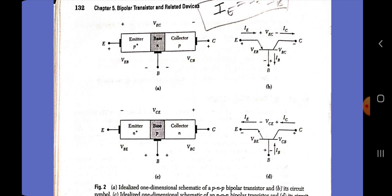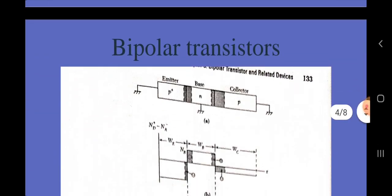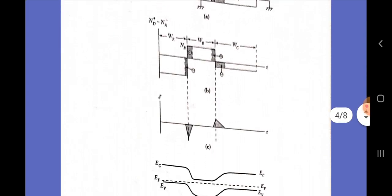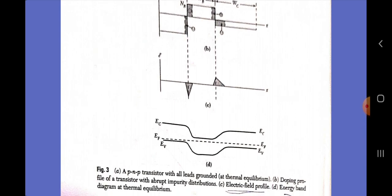Operation in the active mode: this figure shows an idealized PNP transistor in thermal equilibrium — that is, where all three leads are connected together or grounded. The depletion regions near the two junctions are illustrated by the colored regions. The figure below shows the impurity densities in the three doped regions, where the emitter is more heavily doped than the collector. The base doping is less than the emitter doping but greater than the collector doping. The corresponding electric field profiles of the two depletion regions are shown. The energy band diagram is a simple extension of the thermal equilibrium situation for the PN junction applied to the P-plus/N and P junctions. The results obtained for the PN junction are equally applicable to the base-emitter and base-collector junctions.